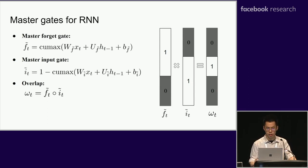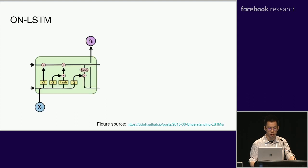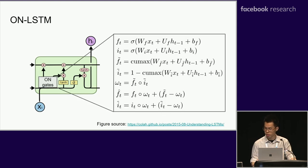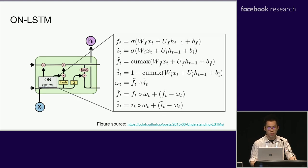By adding these new gates into the LSTM model, we introduce a new ON-LSTM model. Here is the new gating mechanism, where the new f-hat and i-hat replace the original forget and input gates in the LSTM.